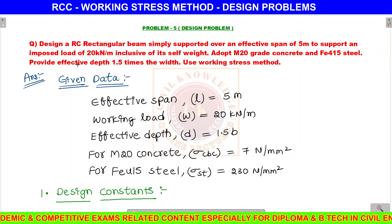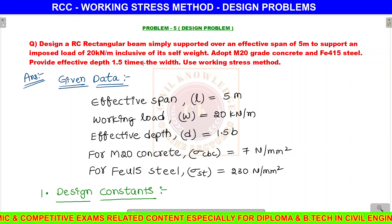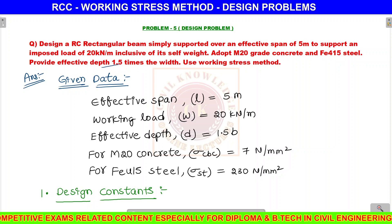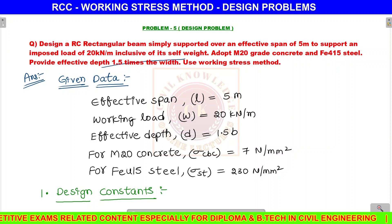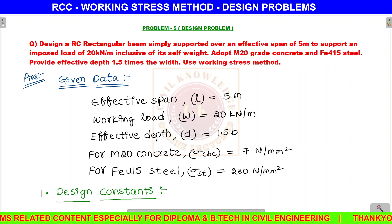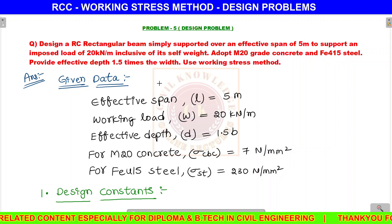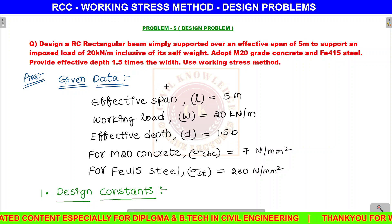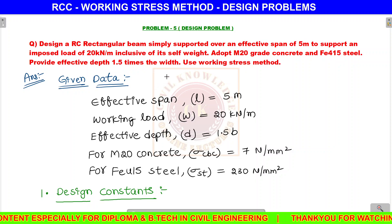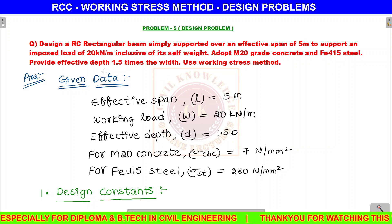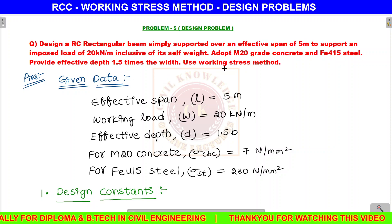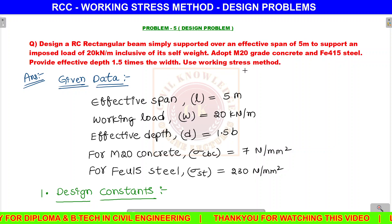The effective depth D is to be taken as 1.5 times the width B. So the ratio of width to effective depth is given as d = 1.5b. We will solve this using the working stress method.